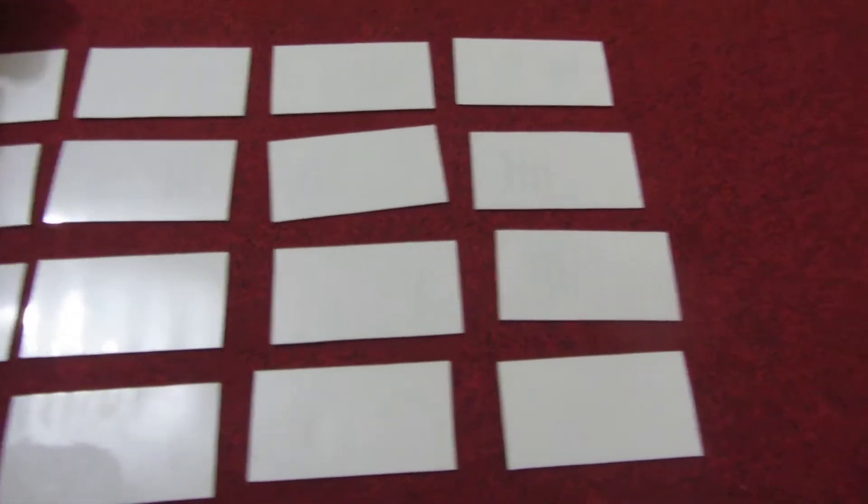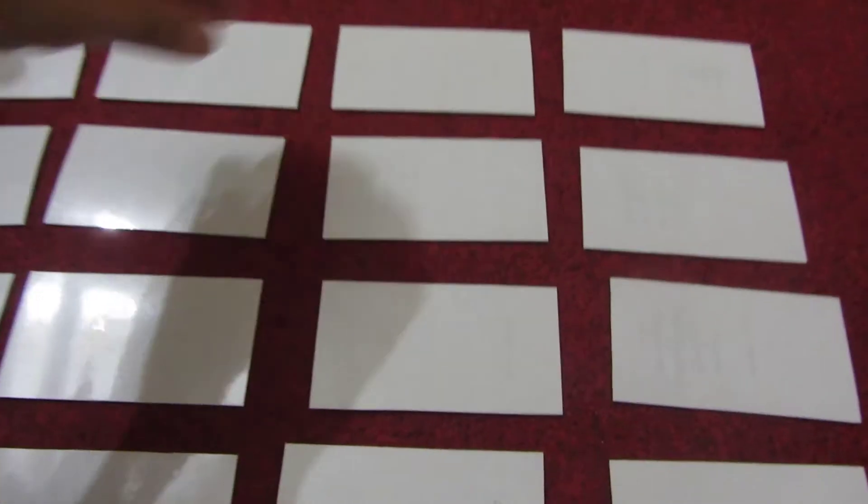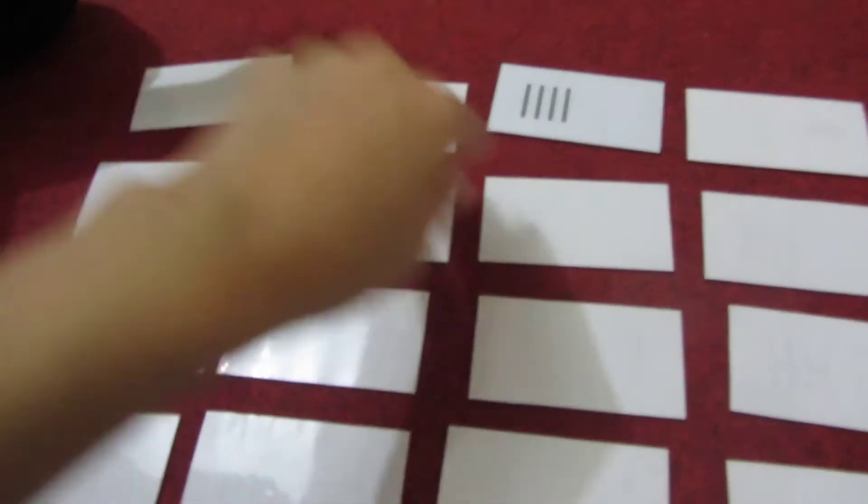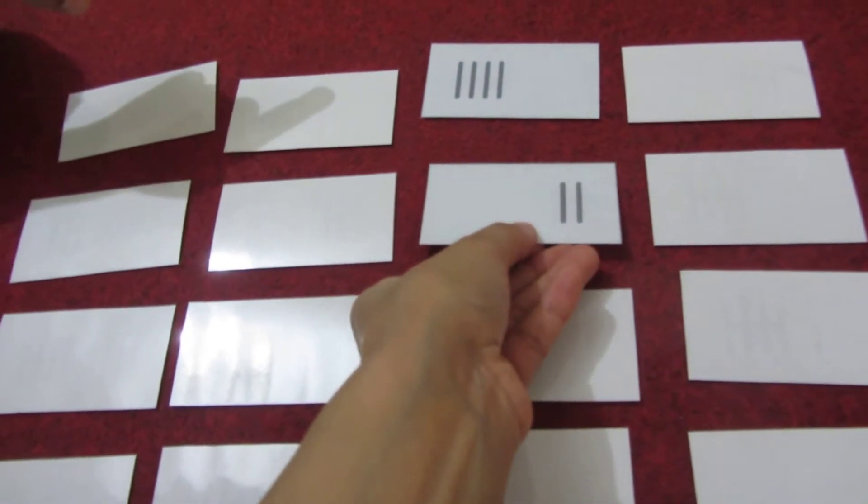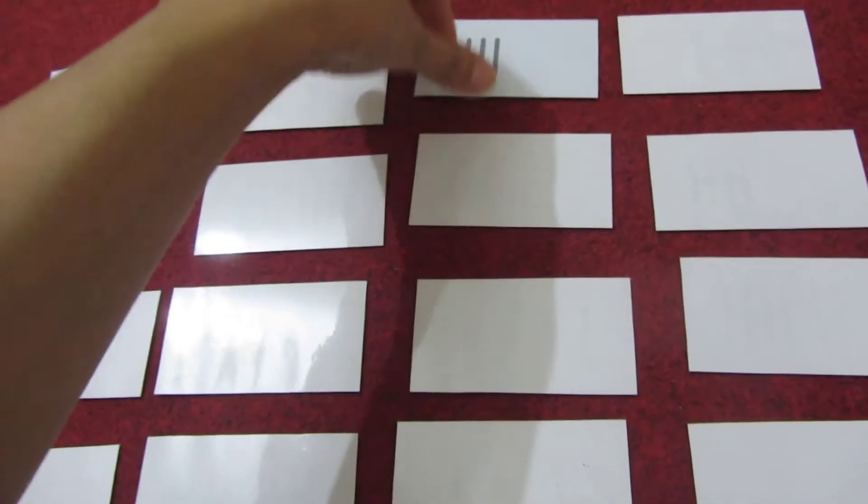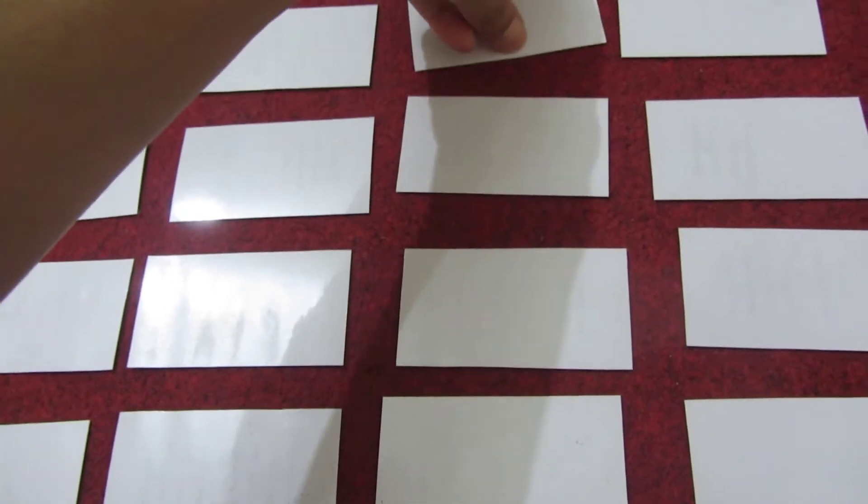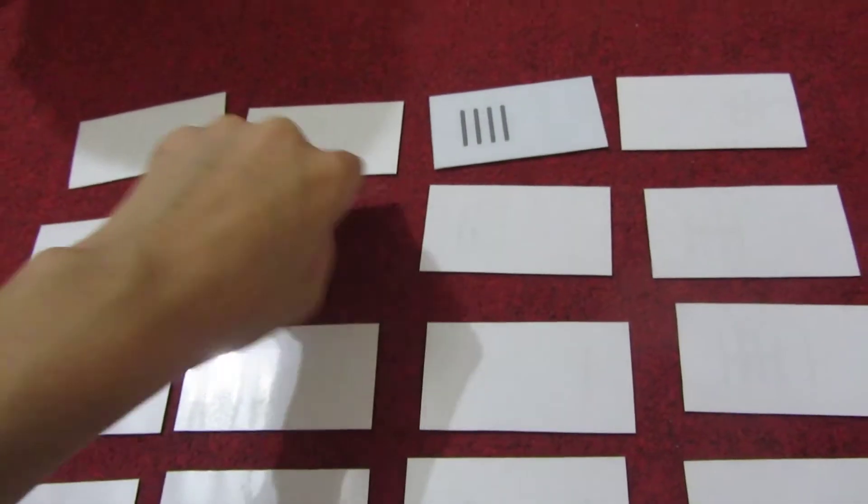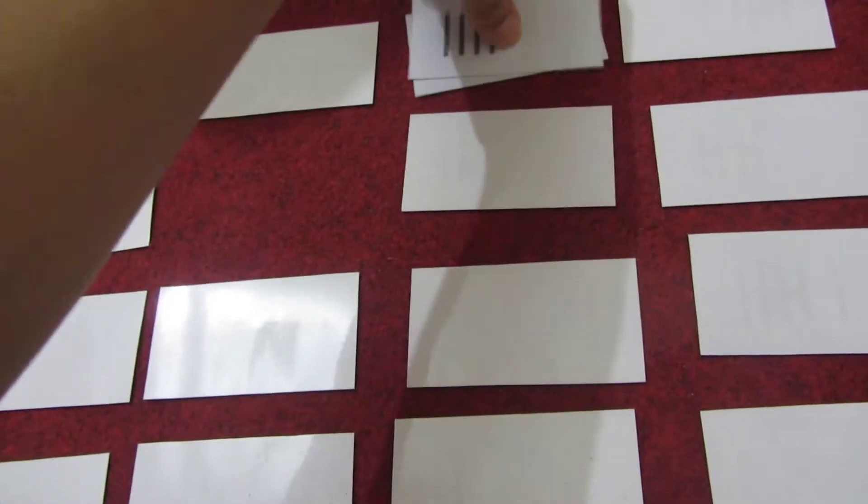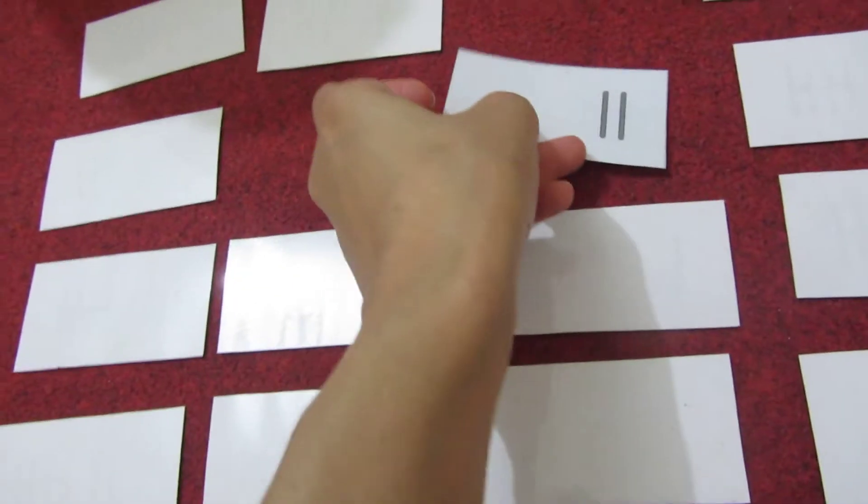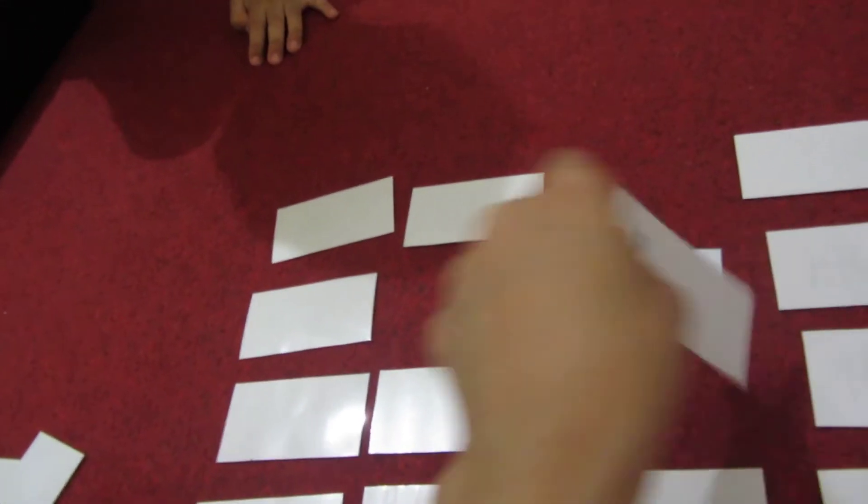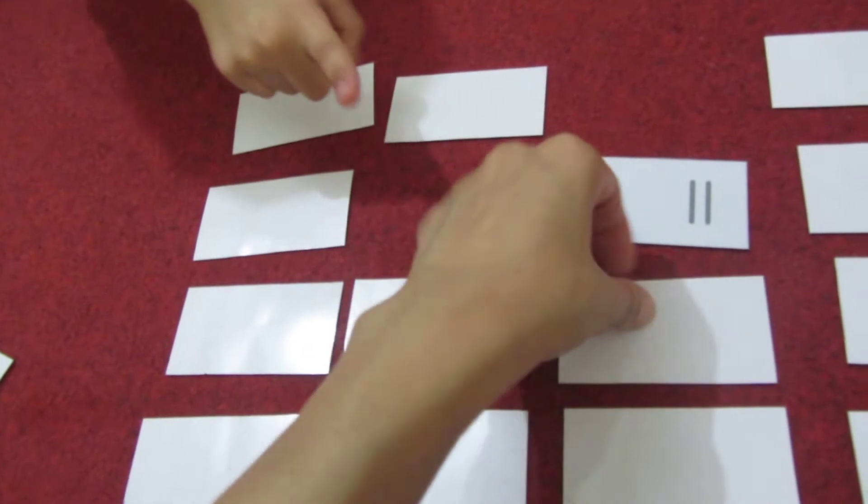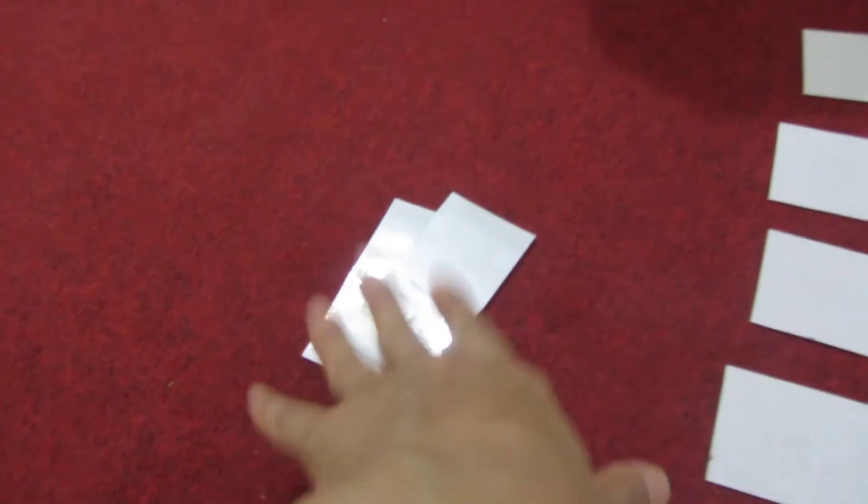So this is how we have arranged it. First we have mixed two sets of cards randomly. Now if it's my first turn, let's see. I'm going to do this—this is four. This is not, so I'm going to keep it back. If he will match, then he will keep it. That's the game.